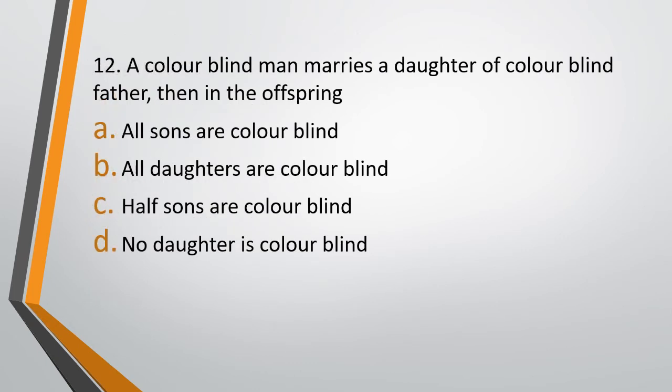Question number 12. A colorblind man marries a daughter of a colorblind father. In the offspring: all sons are colorblind, all daughters are colorblind, half of the sons are colorblind, or no daughter is colorblind. The correct answer is Option C — half of the sons would be colorblind.